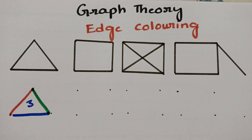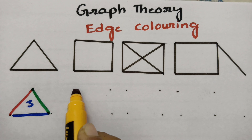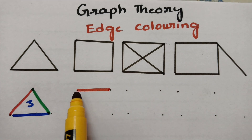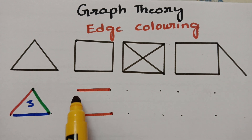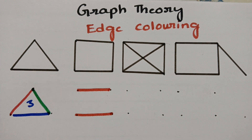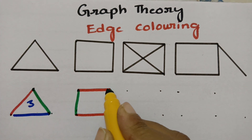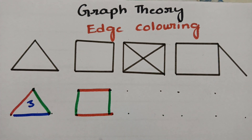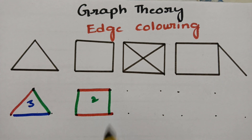The next graph has four edges. If I take red color here, I have to use red again only where edges are not adjacent. For adjacent edges I am taking green. The edges have different colors, and therefore the chromatic number of this graph is 2.